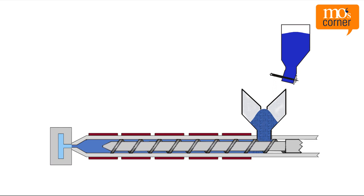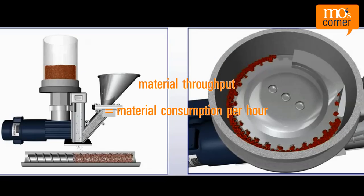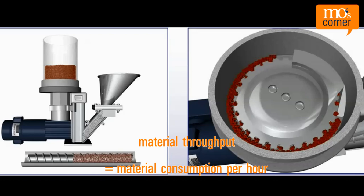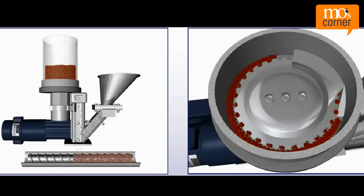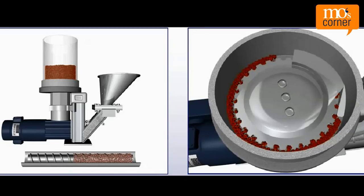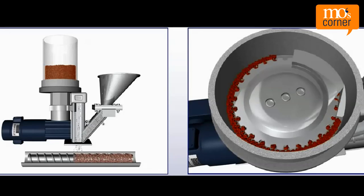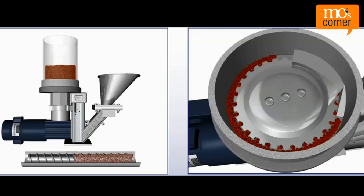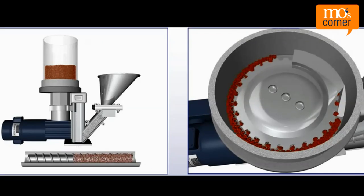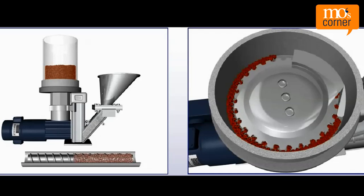When we speak of material throughput, we usually mean material consumption per hour. If synchronous dosing units with free intake are in operation, this needs to be considered when the system is designed. Synchronous dosing units with gravity feeding of the main component are only in operation during the screw back time of the machine. The machine will signal when screw back starts, the main component starts flowing, and then the additive is dosed synchronously at the set percentage.